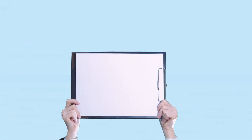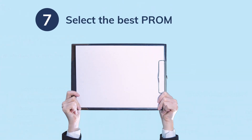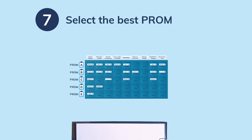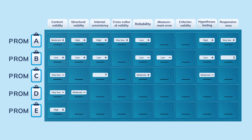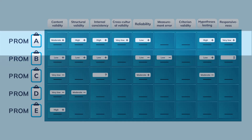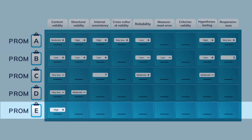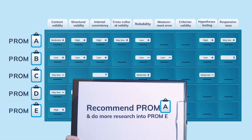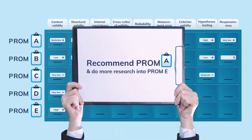Now it's time to select the best PROM. In step 7, you will make an evidence-based and fully transparent recommendation on the quality of each PROM. We see that we have the most information for PROM A and B. PROM A has the most pluses and is often graded as high quality. PROM E is a newly developed PROM — it has great content validity with high-quality evidence, but not enough studies were conducted to recommend it just yet. Our final conclusion would be to recommend PROM A and to do more research into PROM E.